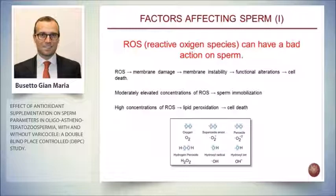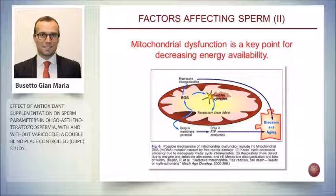When talking about reactive oxygen species, what is really important is understanding their concentration. If you have too much, you can have damage such as sperm immobilization, lipid peroxidation, and cell death. But even a very small amount is not a good sign — you need some ROS, but not zero, because ROS are needed by sperm for its maturation. Regarding mitochondrial function, the mitochondria are fundamental for energy metabolism, and ROS are able to create damage to the mitochondria as well.